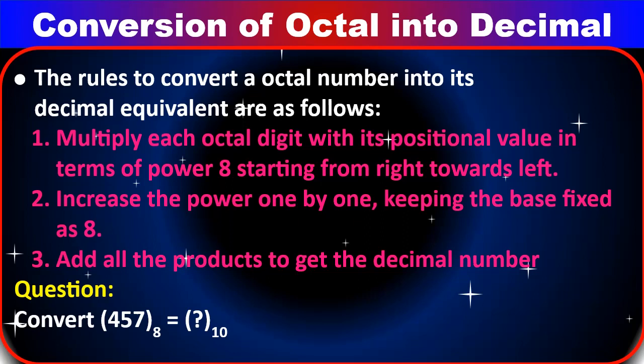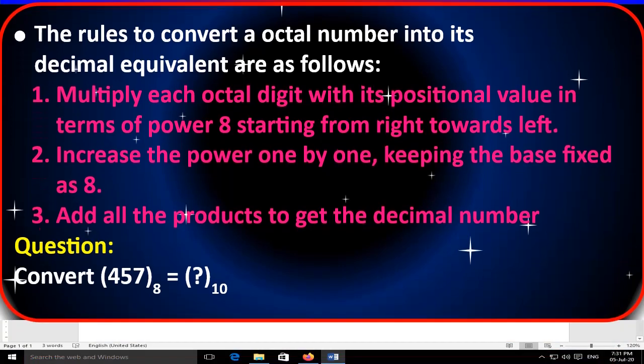Conversion of octal into decimal number system: the rules are very similar to binary into decimal. Multiply each octal digit with its positional value in terms of powers of 8, starting from right towards left. Then increase the power by 1 each time, keeping the base fixed as 8. Then add all the products to get the decimal number. Question: convert (457)₈ to base 10.